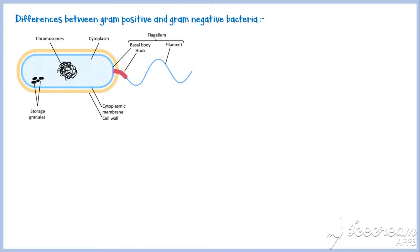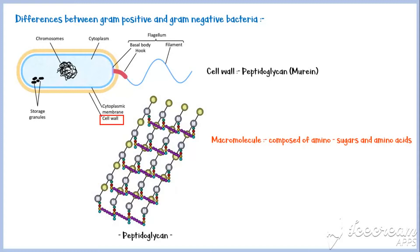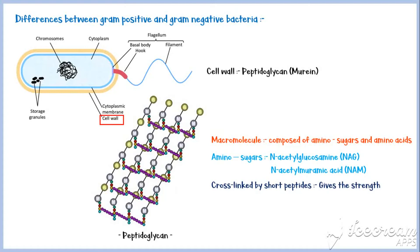The differences between gram-positive and gram-negative bacteria are primarily related to their cell wall composition. Bacterial cell walls are composed mostly of a substance unique to bacteria known as peptidoglycan or murein. However, the thickness of this peptidoglycan cell wall differs in gram-positive and gram-negative bacteria. Peptidoglycan is a macromolecule composed mainly of amino sugars and amino acids. There are two types of amino sugars present: N-acetyl glucosamine and N-acetyl muramic acid, denoted by the letters G and M in the diagram respectively. These alternating amino sugars are cross-linked by short peptides, which gives strength to the cell wall.